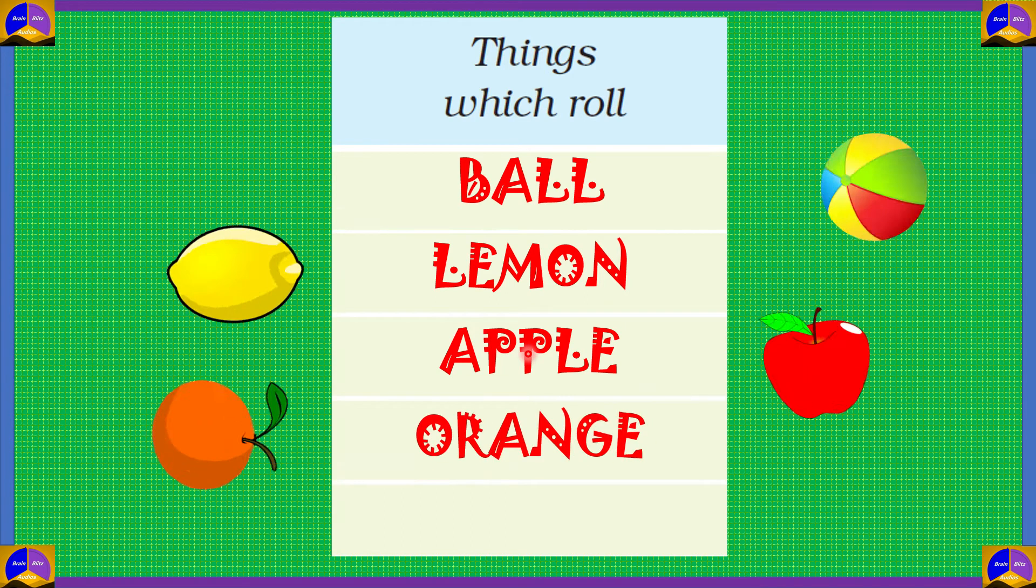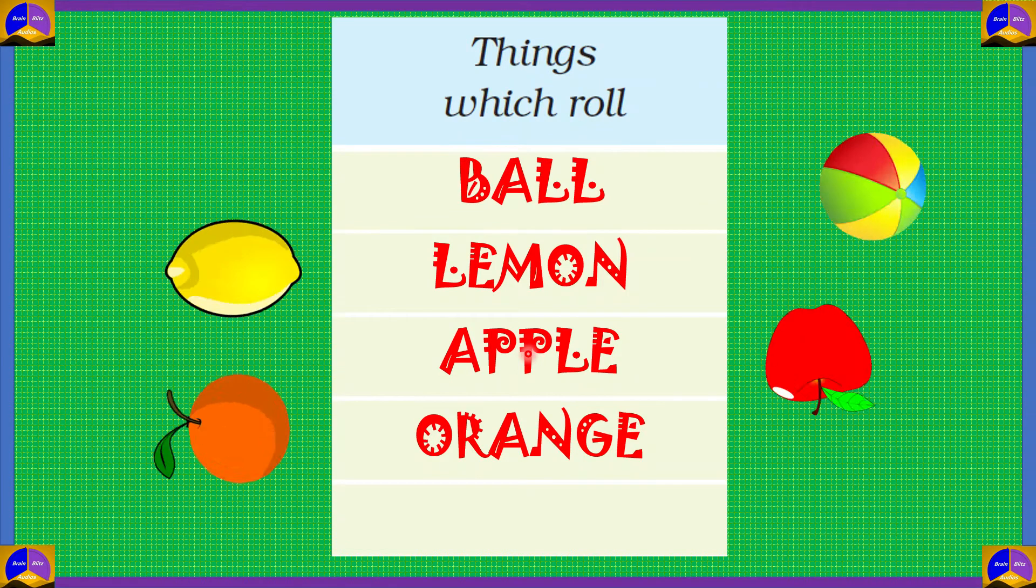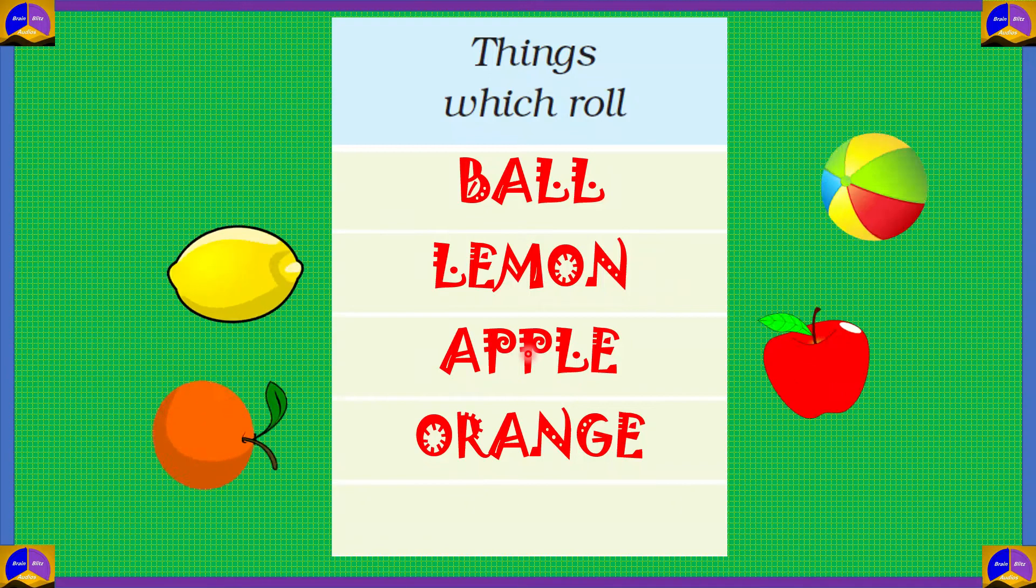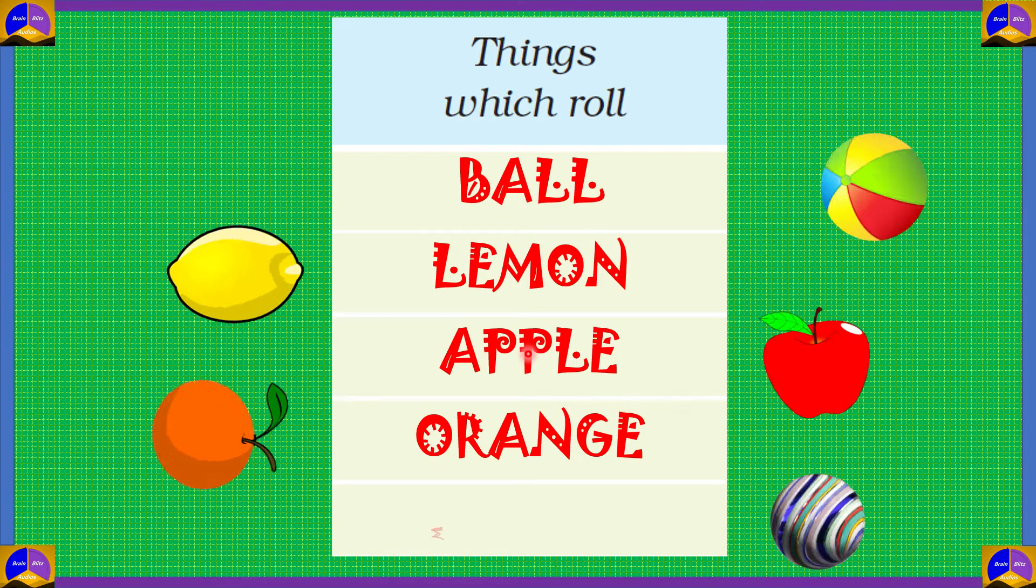Then, we have an orange. An orange is a round fruit. So, if we push it, it will move across the table. So, this is also a thing which rolls.